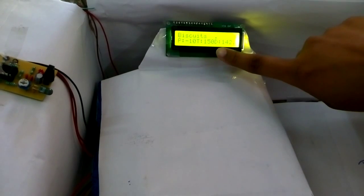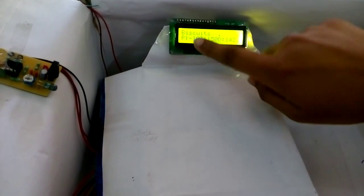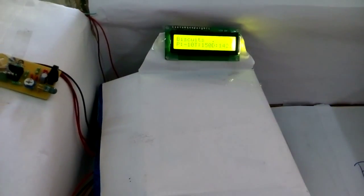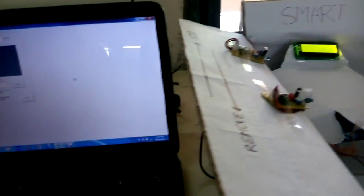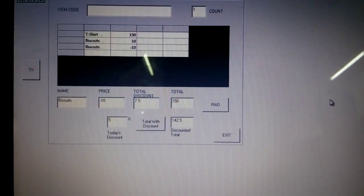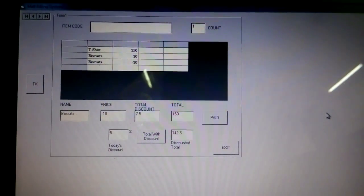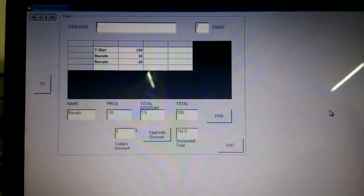Now 160 price becomes 150 and the price of the biscuit is minus 10, means it is deducted. On the VB window also we can see that biscuits minus 10, means biscuit item is deducted from the total list. And now the only two items are purchased.